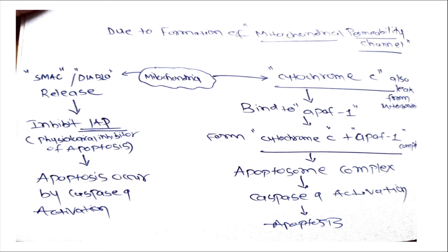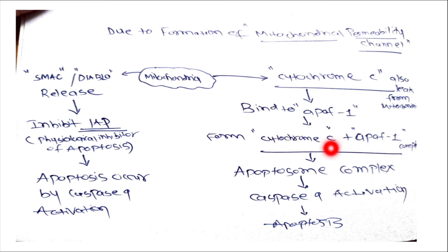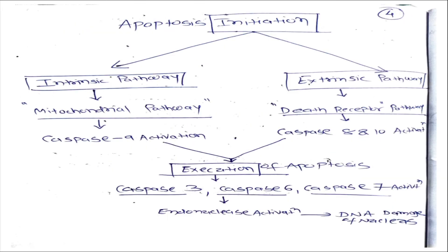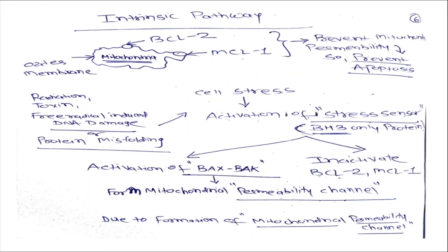The second released substance, cytochrome c, will bind to APAF-1, forming the cytochrome c–APAF-1 complex known as the apoptosome complex. This apoptosome complex leads to caspase 9 activation and therefore apoptosis. So finally in the intrinsic pathway, you will have caspase 9 activation, which leads to execution of apoptosis.